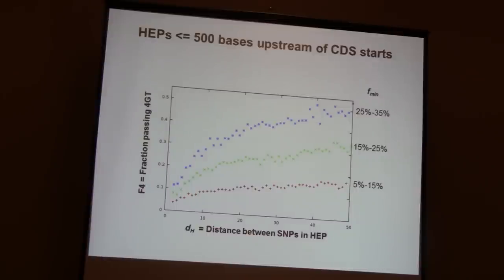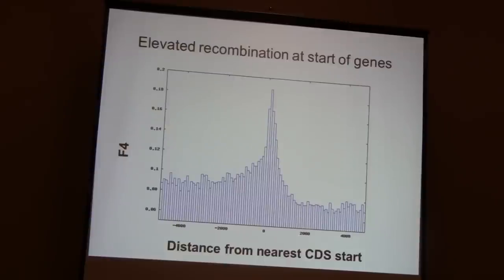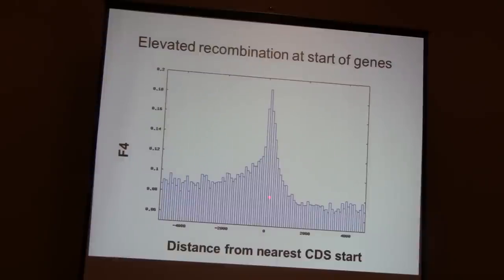Note that this is data we are looking at directly — what I've said so far is 100% model independent. When you bin the HEPs in 100-base bins according to distance from the nearest CDS start, there is a striking increase in recombination events right at the first coding exon of the gene. As you move into the gene, it falls off to a level that's even lower than the background, and eventually out at around 10 kilobases it comes back up.